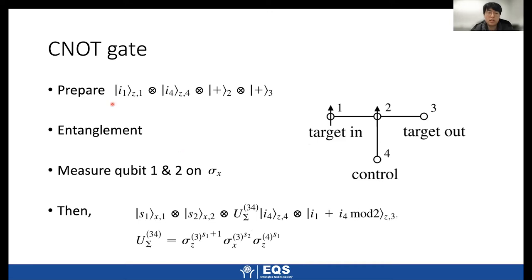So let's say initial state is generally i1 and i4. And same as before, we prepare other qubits in plus state. So here we need at least four qubits. In this kind of configuration, we again apply entanglement before and measure qubit 1 and 2 on X basis. Then we have this state. This is XOR operation, which means that we implemented CNOT gate. So here we need to consider this auxiliary rotation. So this is the product of state three, operational state qubit three and qubit four, but it's a product state. So we can easily take care.